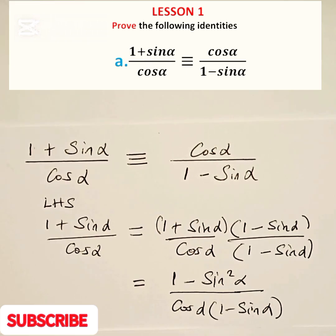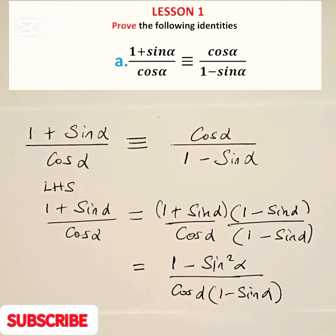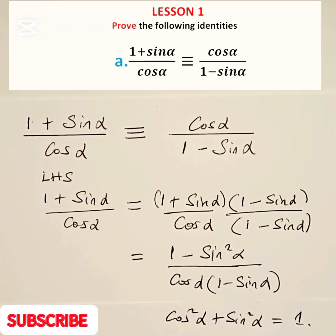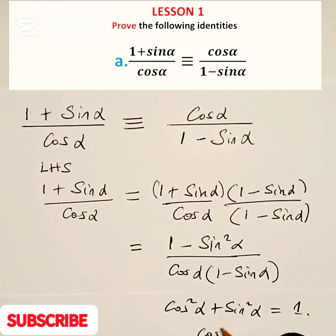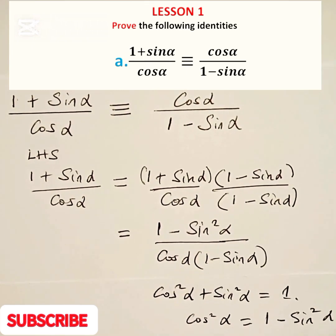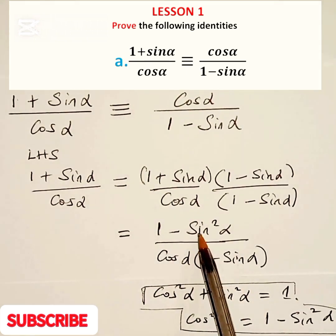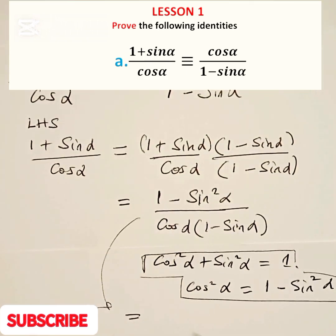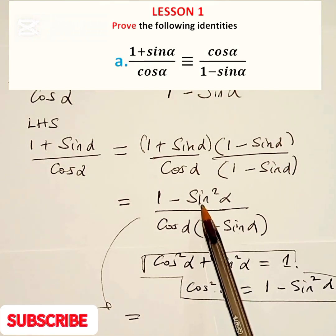At this stage, we are going to use the square identity. The square identity says cos squared alpha plus sin squared alpha is equal to 1, and that means cos squared alpha is equal to 1 minus sin squared alpha. So we are going to use that identity on the numerator, replacing 1 minus sin squared alpha with cos squared alpha.